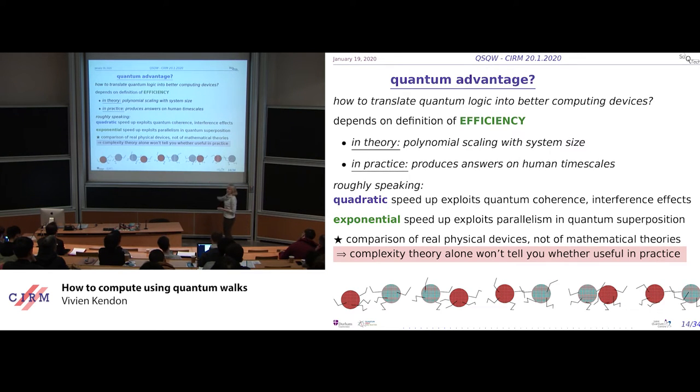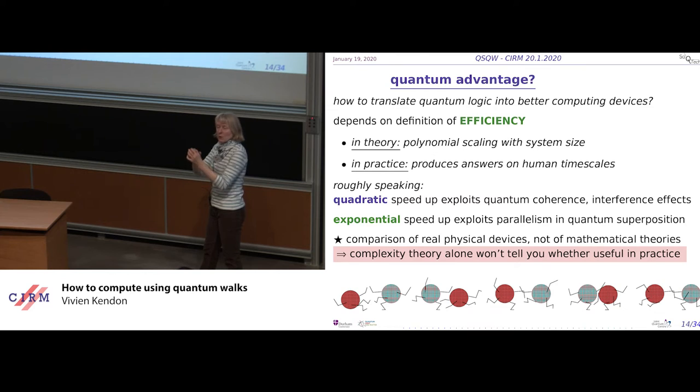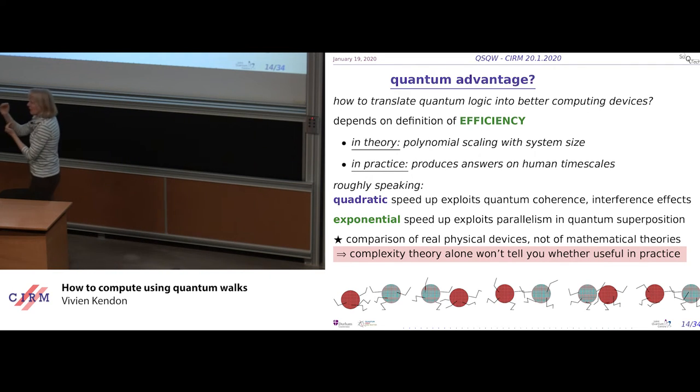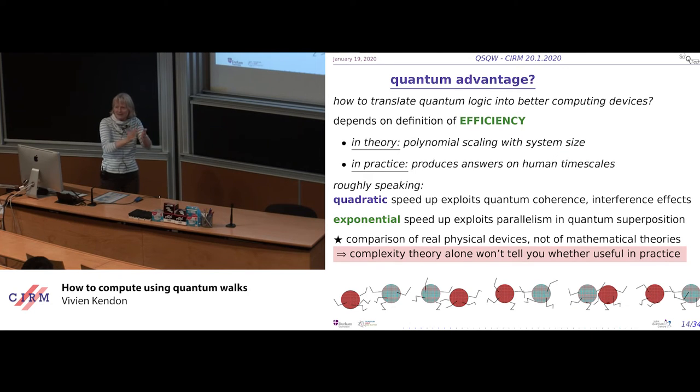So to get an advantage, if we're going to use a quantum computer, in theory, so complexity theory, it's a branch of mathematics. And it's very important for understanding the baseline of what's possible. However, what we want in practice is to produce answers on human timescales. How important is this answer, how long are you willing to wait, and how reliable is your computer to compute for days or weeks? And we do run computations for weeks at a time. Roughly speaking, with quantum, if you just get a polynomial speed up that's quadratic or something like that, it's exploiting the quantum coherence. So the interference effects that you get. To get an exponential speed up, you would have to exploit the parallelism in the Hilbert space in the quantum superpositions.